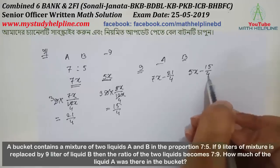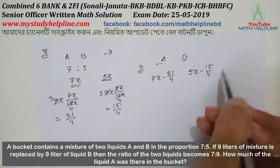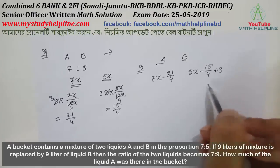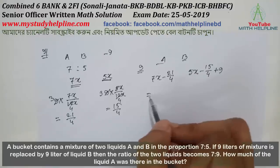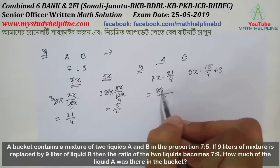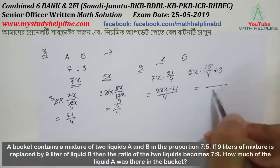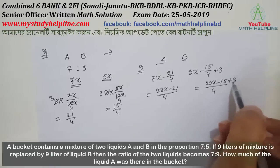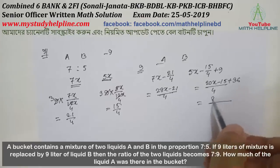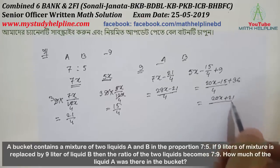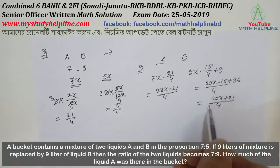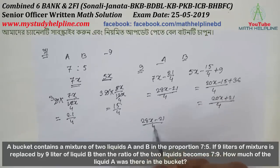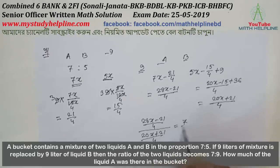The calculation gives 20x minus 15 plus 36 equal to 20x plus 21 divided by 4. Now the ratio is 7 is to 9. The equation becomes: 28x minus 21 divided by 4, divided by 20x plus 21 divided by 4, equal to 7 divided by 9.